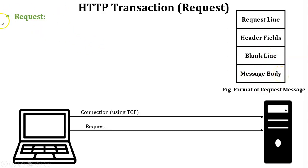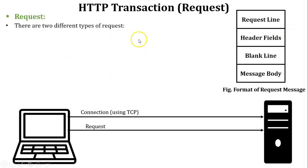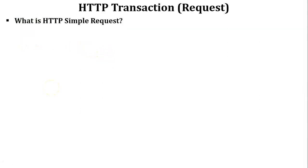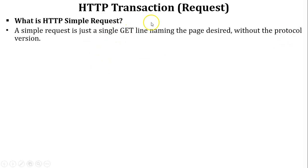There are two different types of requests in HTTP. The first is a simple request and the second is a full request. A simple request is just a single GET line — GET is the method of the HTTP request — and the page desired, which is the URL of the page, without the protocol version. So no protocol version is mentioned in the simple request.